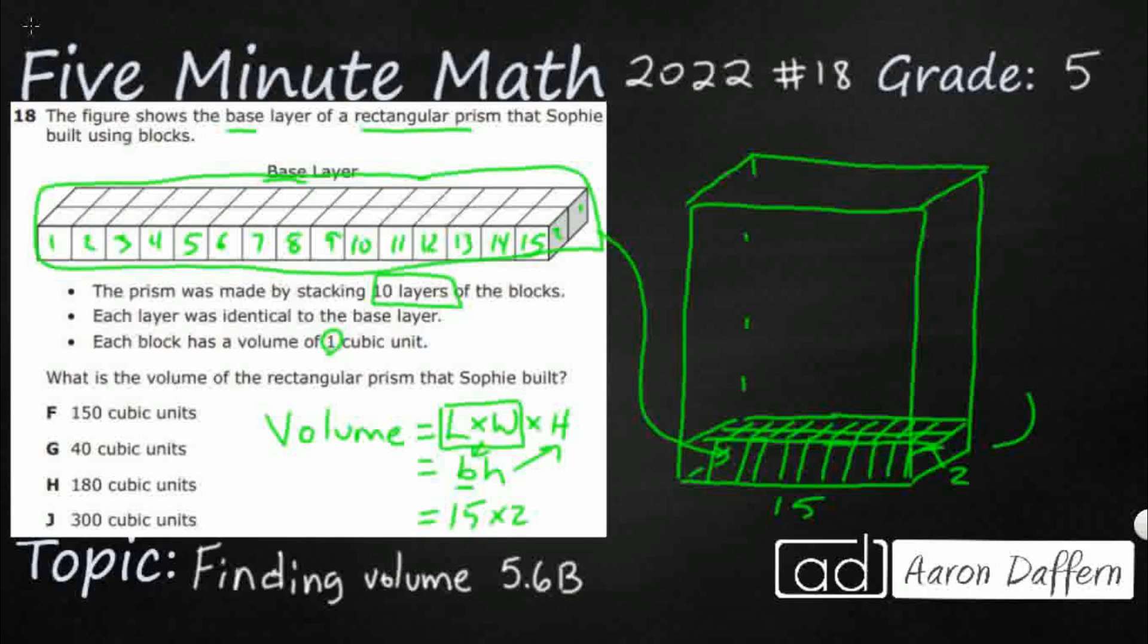And really what we're looking at here is that's 30, which is not one of our options, nor should it be. We're not looking for how big the base layer is. We're looking for the volume of the rectangular prism.